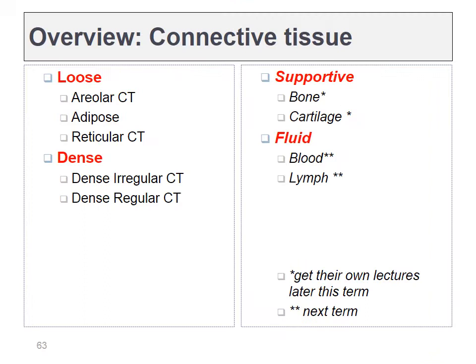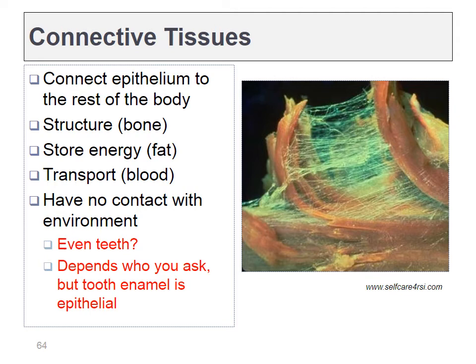Those three tissue types lead us to connective tissue. Anatomists have classified connective tissues into four types. Connective tissues do exactly what they say — they connect one thing to another. They can be very structural, like bone and ligaments; good at storing energy, like adipose tissue; or they can connect distant parts of the body by transporting nutrients, like blood.